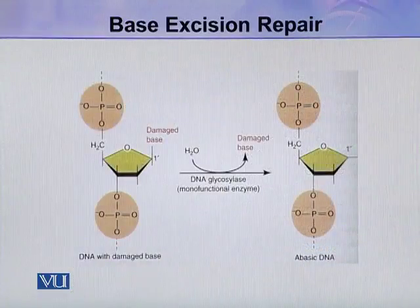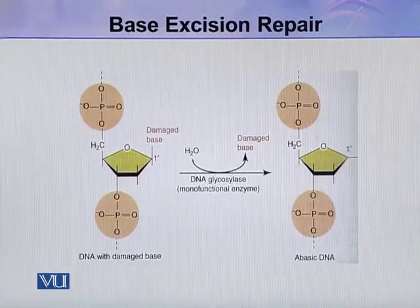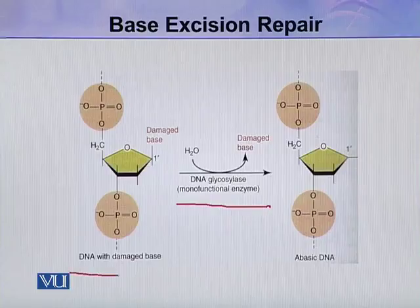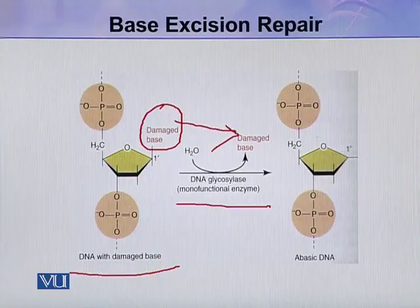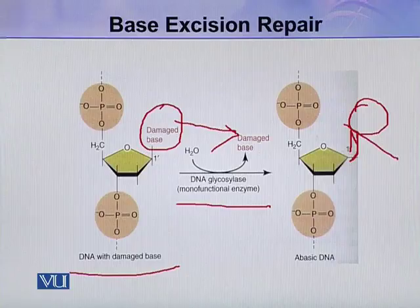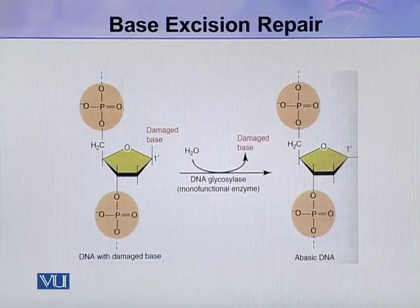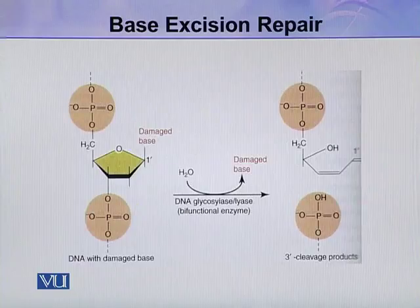Here you can see the reaction catalyzed by DNA-glycosylase, which is a monofunctional enzyme. This is a DNA with a damaged base linked to the sugar through the glycosyl bond. In this reaction, the damaged base is directly removed, and an abasic site is formed — because the damaged base has been removed, this is now an abasic DNA. This is how DNA-glycosylase works.